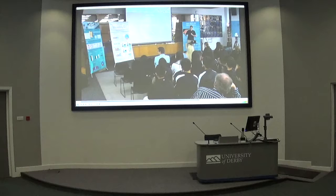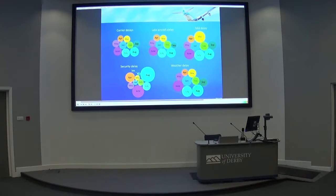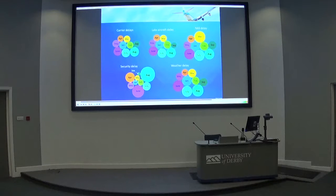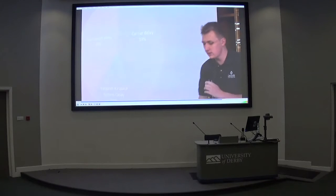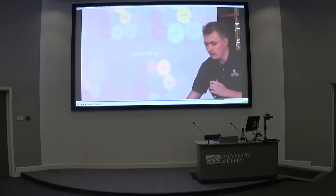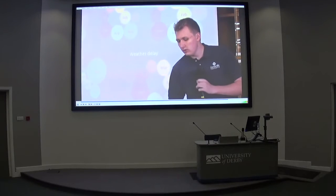These are delays broken down by month, with bubble size representing the size of the delay, divided into five categories by the FAA. The bigger the bubble, the bigger the delay for that month. Most of the delays happen in July and August due to the summer travel surge. For security delays, August appears significant, but from the previous slide we know the actual total was only about 180 minutes of security delays in August.